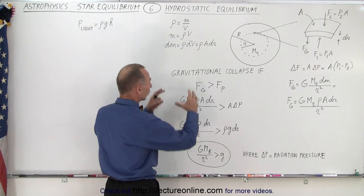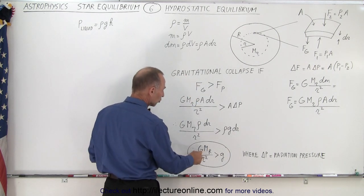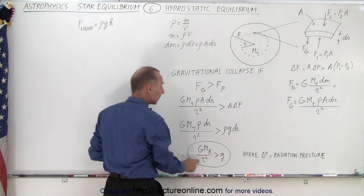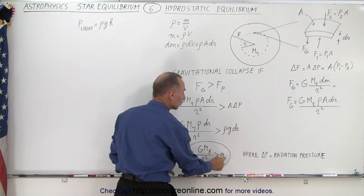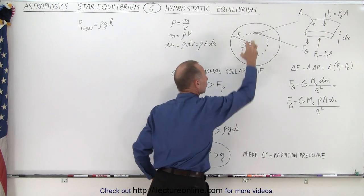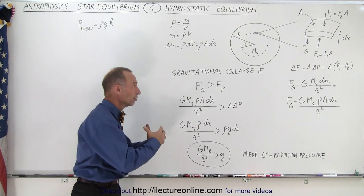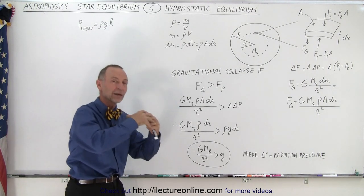And now we realize that for gravitational collapse, we want g times the mass of that region, m sub r, divided by r squared to be greater than the acceleration due to gravity at that point. And the star will continue to collapse. It will continue to do so until the radiation pressure is sufficient to keep that from collapsing.